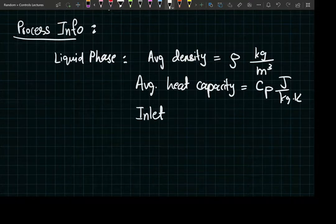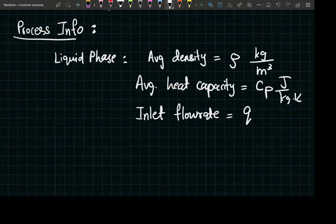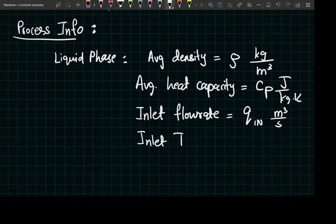The inlet conditions, the upstream conditions: the inlet flow rate is given as q_in, meter cubed per second. And inlet temperature shall be given as T_in, degrees Celsius.